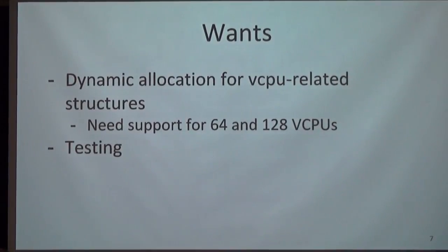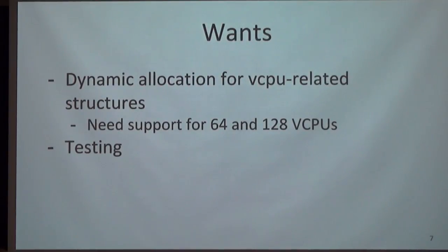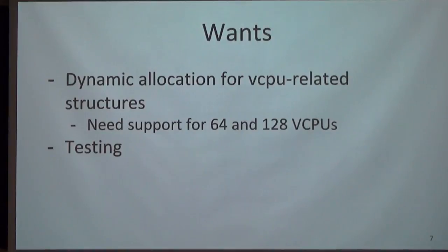There are a couple of changes specifically to scale Beehive. Beehive currently only supports 16 vCPUs. You can change the define to 32, but there's a statically allocated structure. It'll scale to 32 and won't be too large, but once you're trying to go to 64 or 128 vCPUs, this structure gets very large and has to be allocated for every VM. It would be much better if these were dynamically allocated.